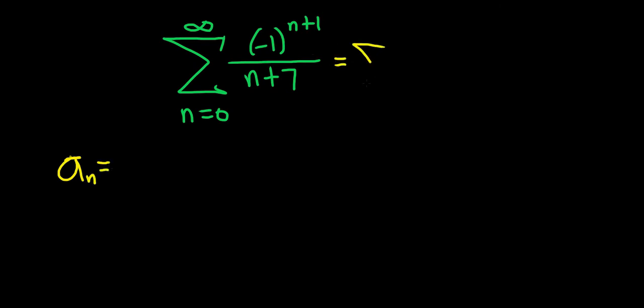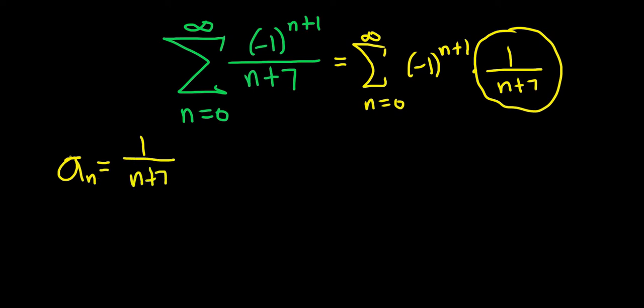Let me rewrite this so you can see exactly what I mean. I'm going to write it like this so you can see exactly what the non-alternating part is. See this, this is the non-alternating part. So that's your a sub n. The first thing you do is identify the piece that is not alternating.